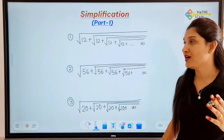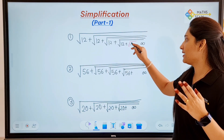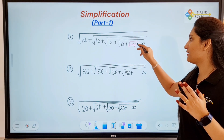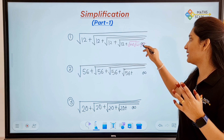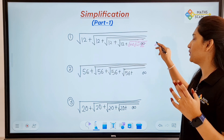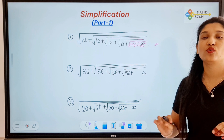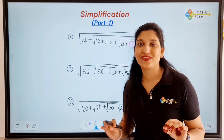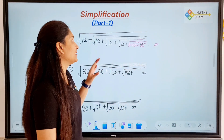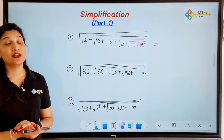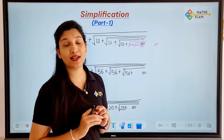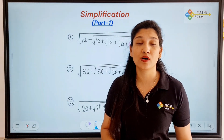Up to infinity means there can be again under root 12 plus, in that again under root 12 plus, again in that under root 12 — it will go up to infinity. We don't know the end of that. These are such questions. And 12 is not a perfect square number, so how do you want to solve it?